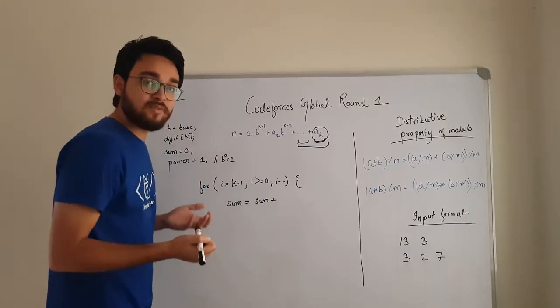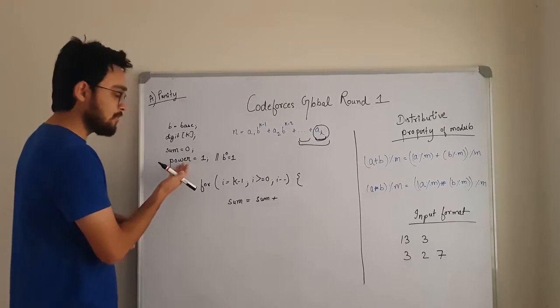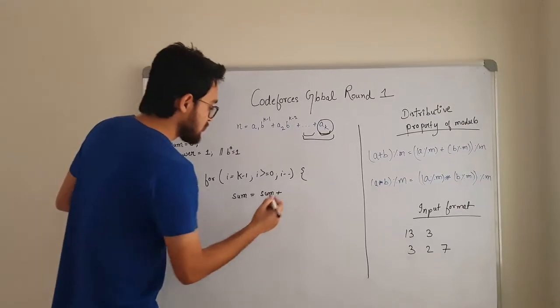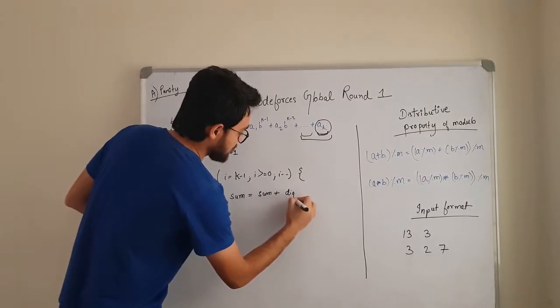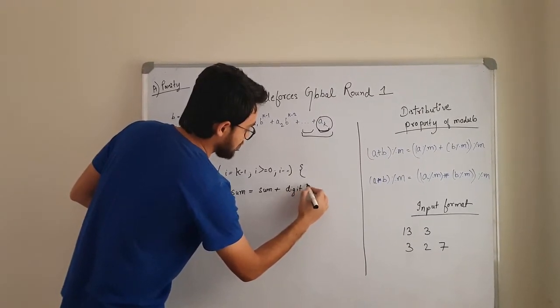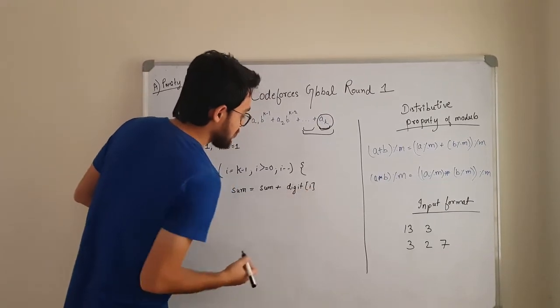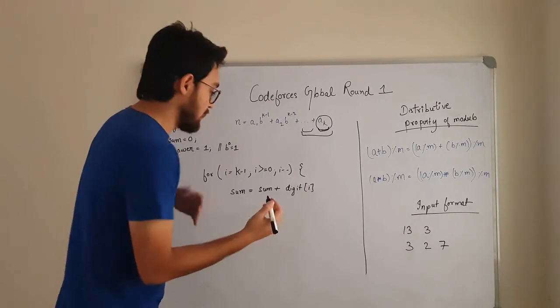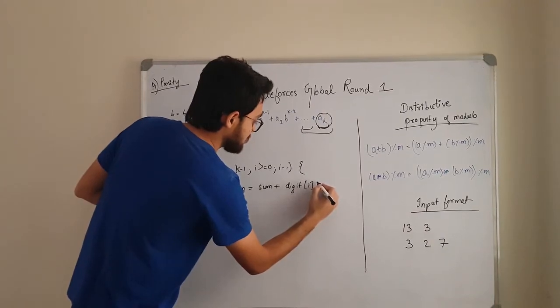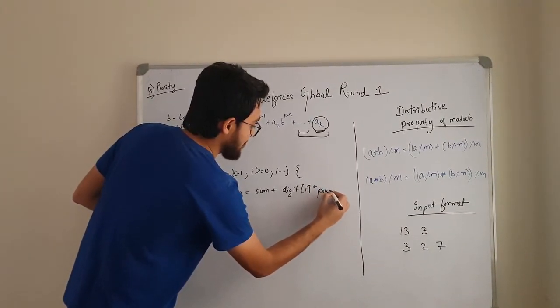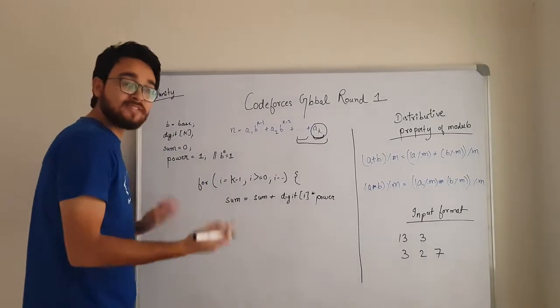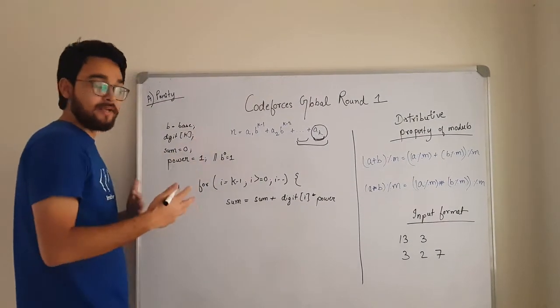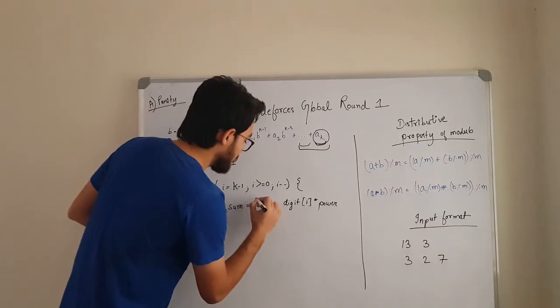Every time you can see the sum is going to be that digit multiplied with the power. So in the first case what is the power? We are storing the power in power variable. So we will take the digit and we will multiply it with power. So this is the thing that we need to do. But as we said, we will be moving the modulo inside. So we will apply a modulo here.